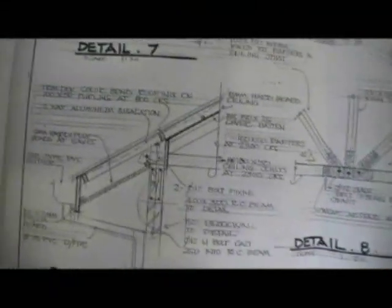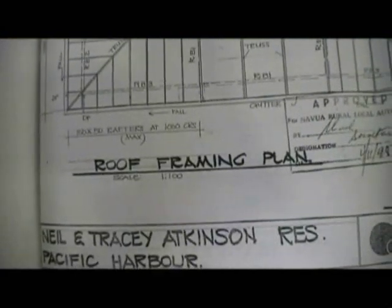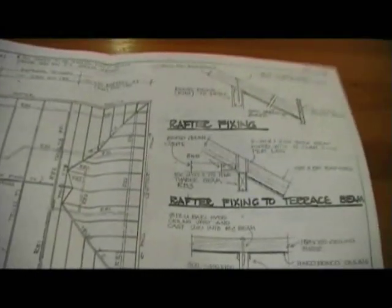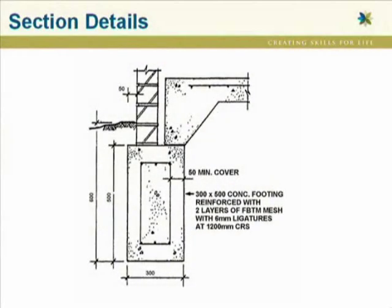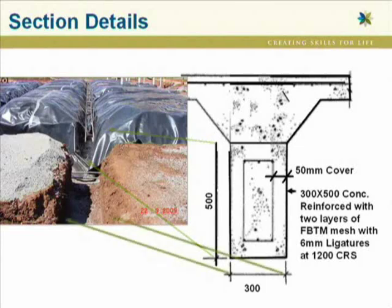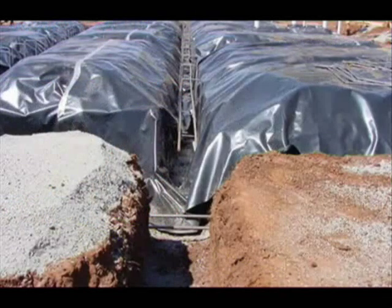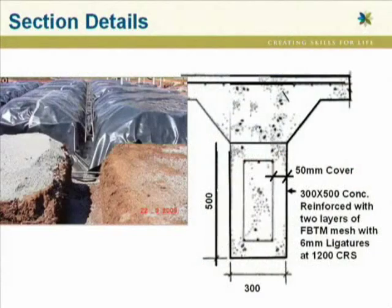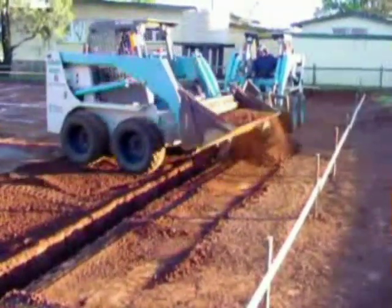Sectional details are also a very important part of a set of working drawings, especially when communicating important engineering specifications. Examples of such specifications include details of roof members, footing depths, and tie-down details. Looking at this footing detail, we can see that the footing is to be 500mm deep and 300mm wide. The information presented in the footing detail is valuable right through from site set-out to excavation and finally concreting as well.